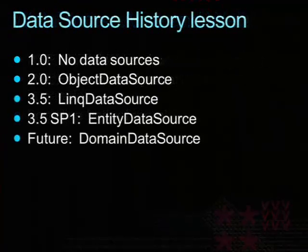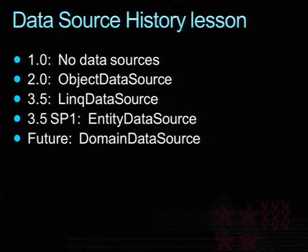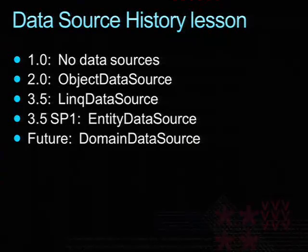I'll start with a quick history of data sources in ASP.NET. Going back to 1.0, we simply did not have the concept of a data source control — everything was very much manual. In 2.0, there was a major architectural change and we introduced data sources. There was SQL data source and others, but more interesting is object data source, which let you write a class with CRUD methods. In 3.5, with the introduction of LINQ, we came up with LINQ data source, which talked to a LINQ to SQL data context. Then 3.5 also brought Entity Framework, and we wrote entity data source, which plays the same role as LINQ data source but for EF instead of LINQ to SQL.